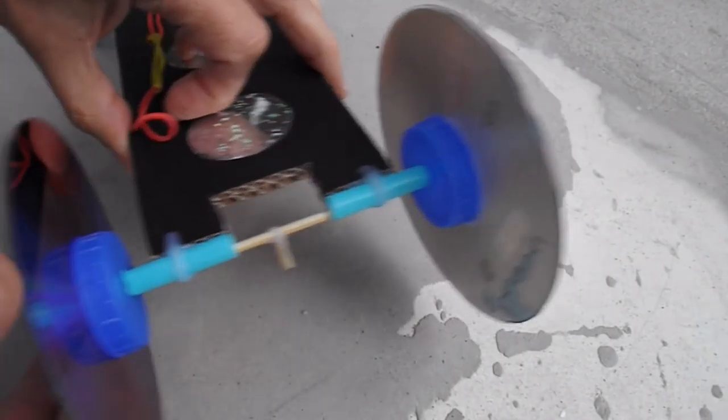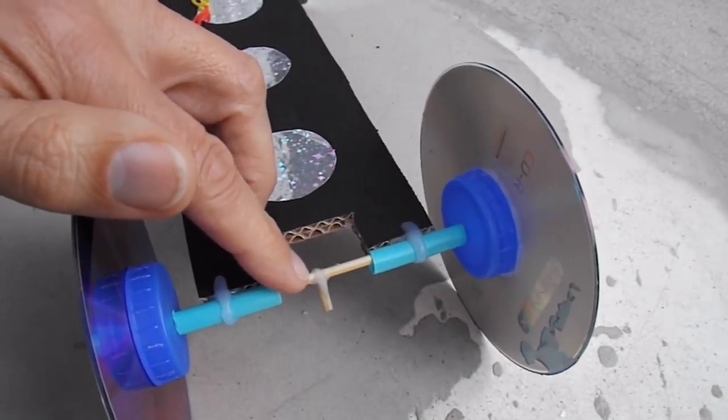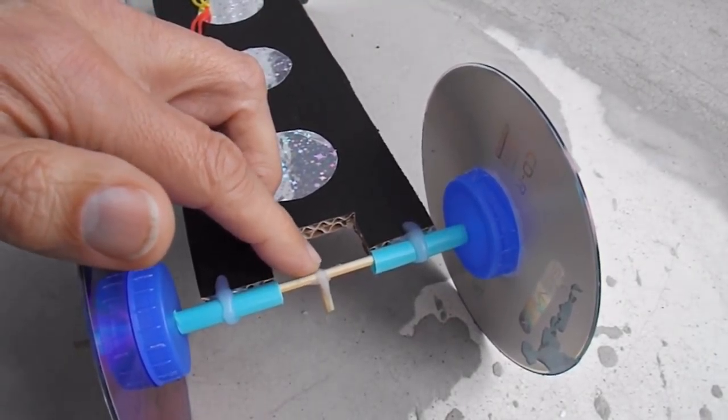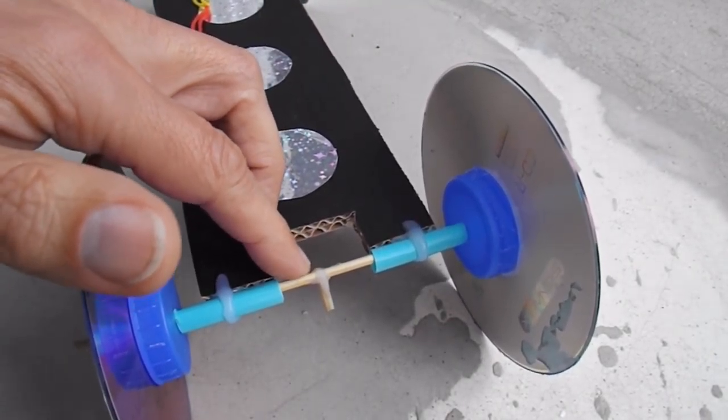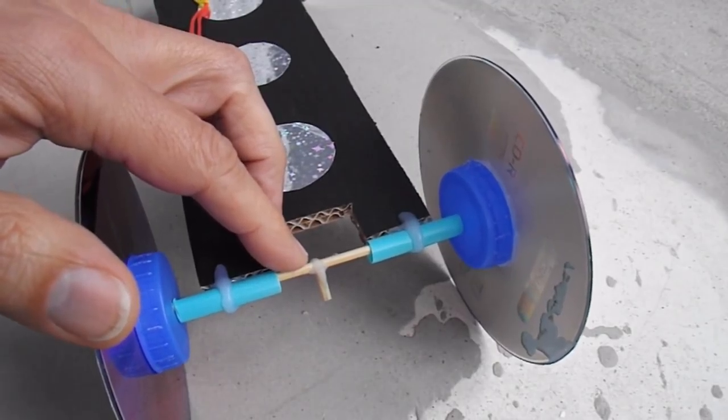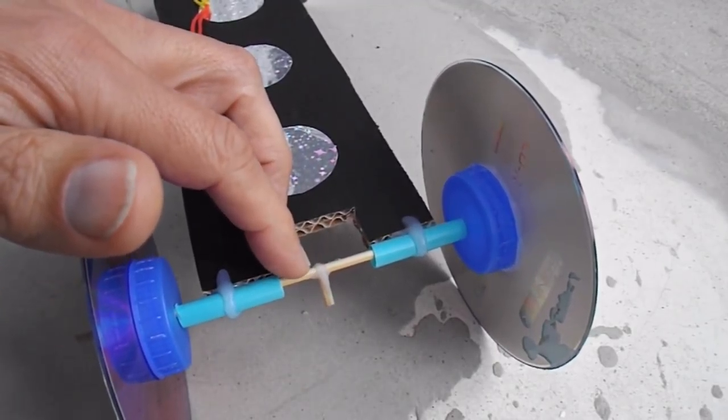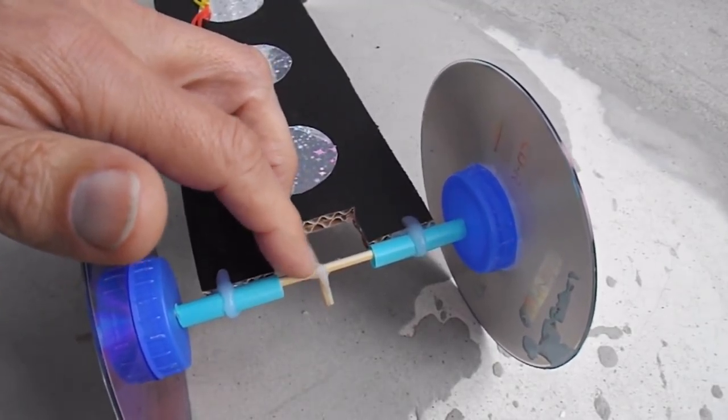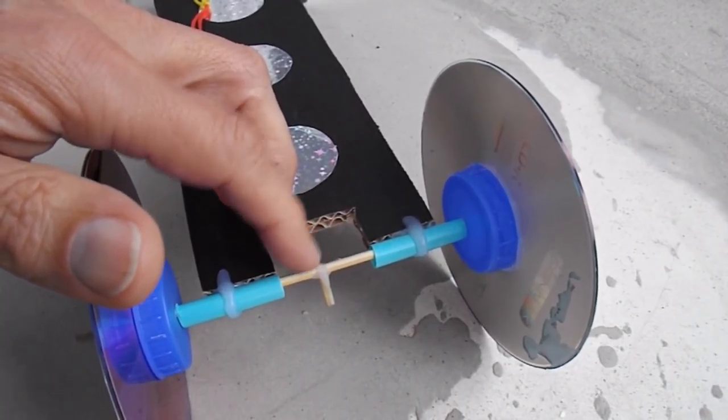But sometimes you can't attach a peg to the back axle for various reasons. It may be excluded from your build details, you're not allowed to do it. So there's an easy way to do this without having a peg on it. So I'll just take that peg off.